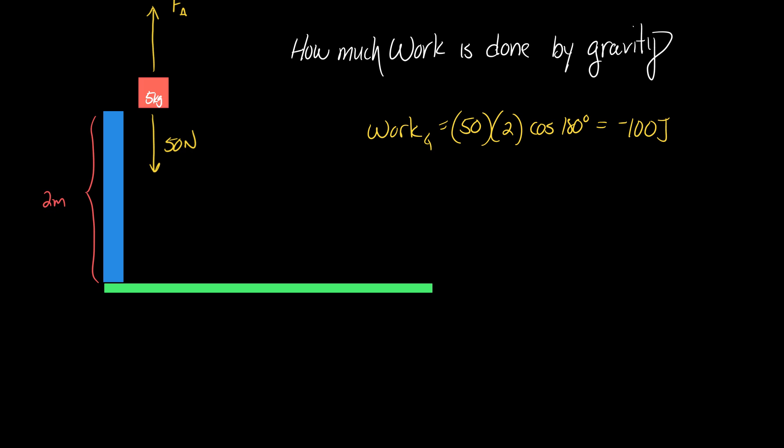If I give it 101 joules, then it has one joule of extra energy that it didn't need. That's going to be kinetic energy. The box is going to continue to move up until gravity stops it. Now, how much more work is done by gravity when I move the box to the side there?